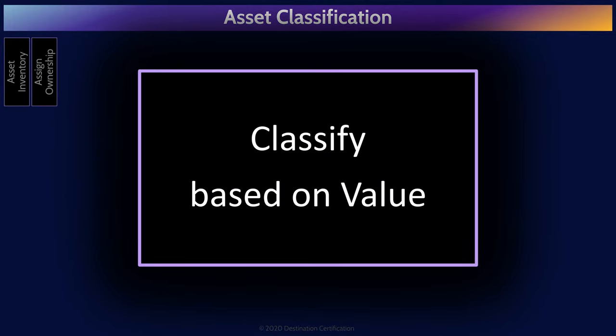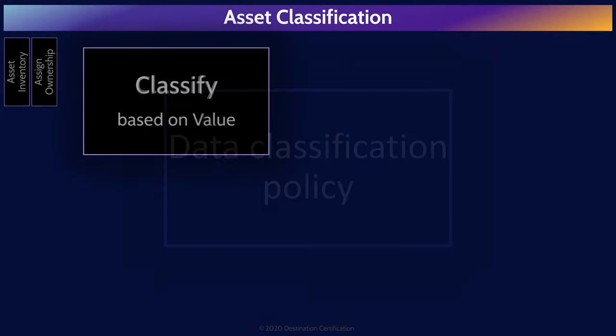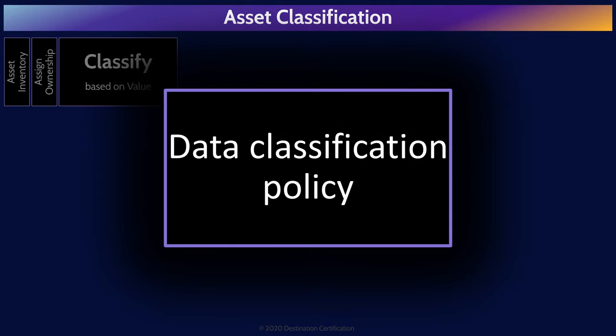The reason we classify assets is so that we can identify how valuable they are to the organization and therefore the appropriate level of protection required. Before we can begin classifying anything, we first need to define the classification levels, the classes, and clearly define who is accountable and responsible for what. All of this should be documented in the data classification policy. Standards, procedures, baselines, and guidelines should then be created based on the policy.